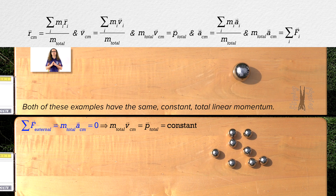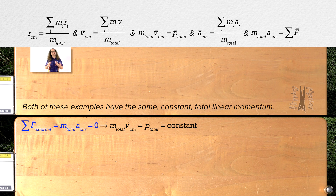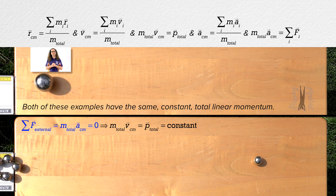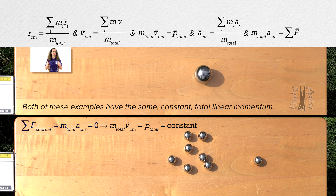The linear momentum of the system of particles remains constant only when the net external force acting on the system of particles equals zero. Thank you very much for learning with me today. I enjoyed learning with you.